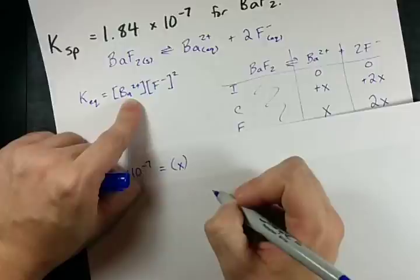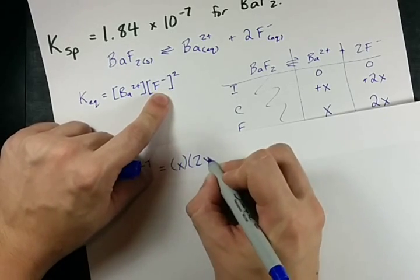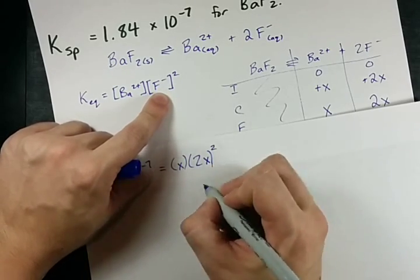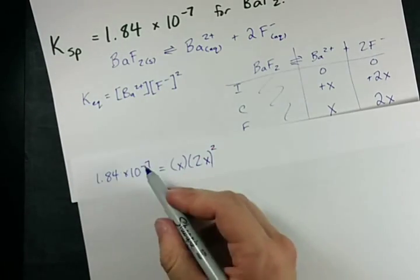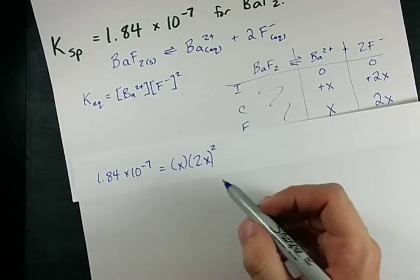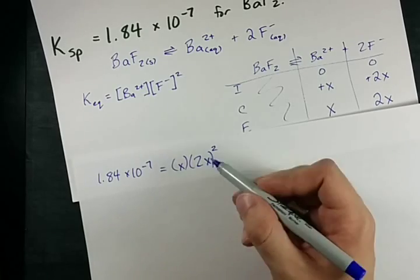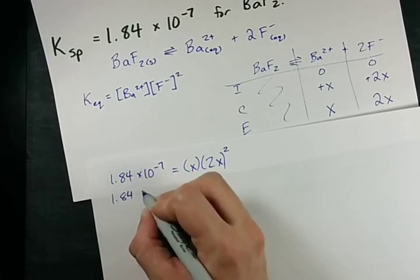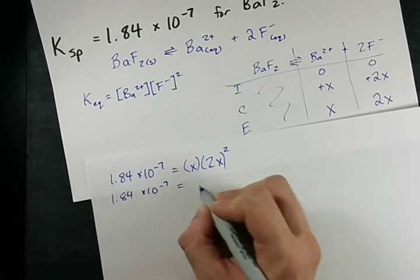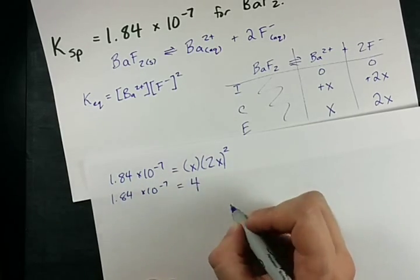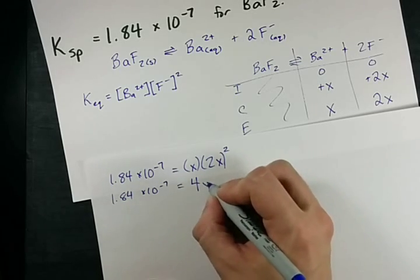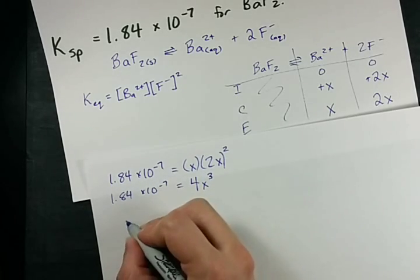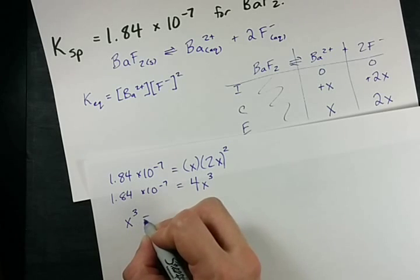Keq here is 1.84 times 10 to the negative 7 given equals Ba2+ concentration, that's x, times F minus concentration squared. Here we are. Now we just need to solve for x to figure out how many moles of BaF2 dissolved. 1.84 times 10 to the negative 7, 2 squared gives 4, x times x squared gives x cubed.